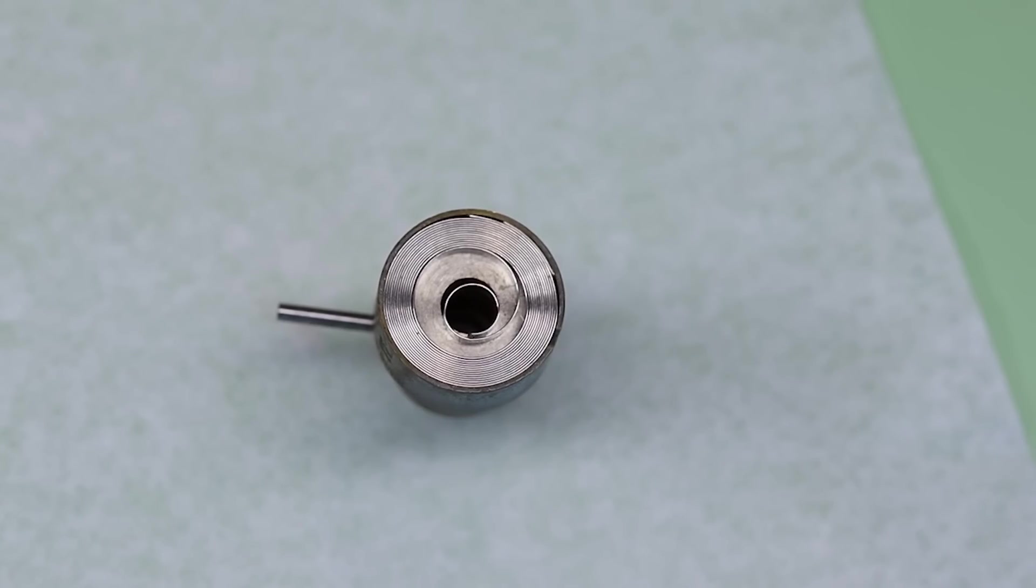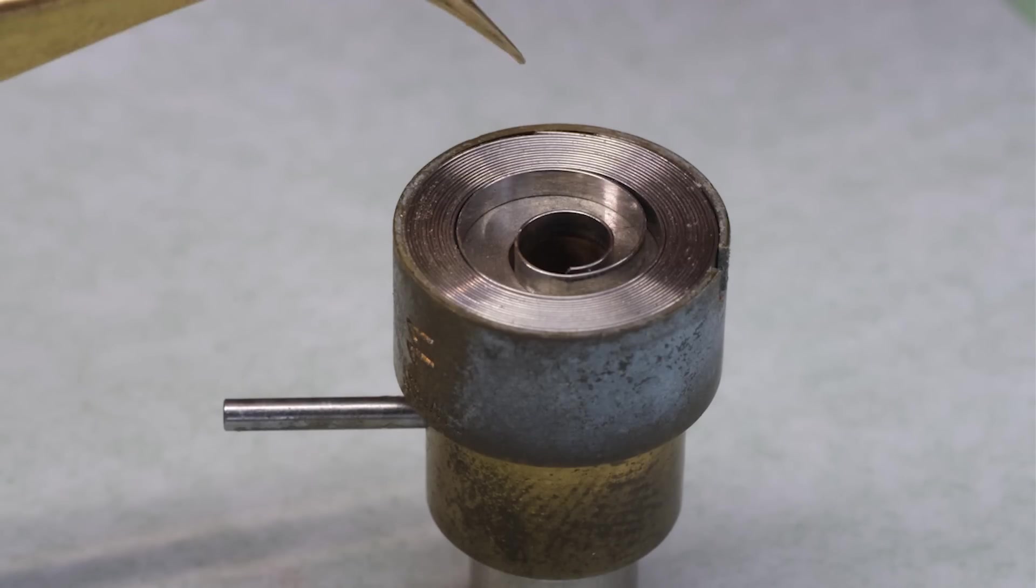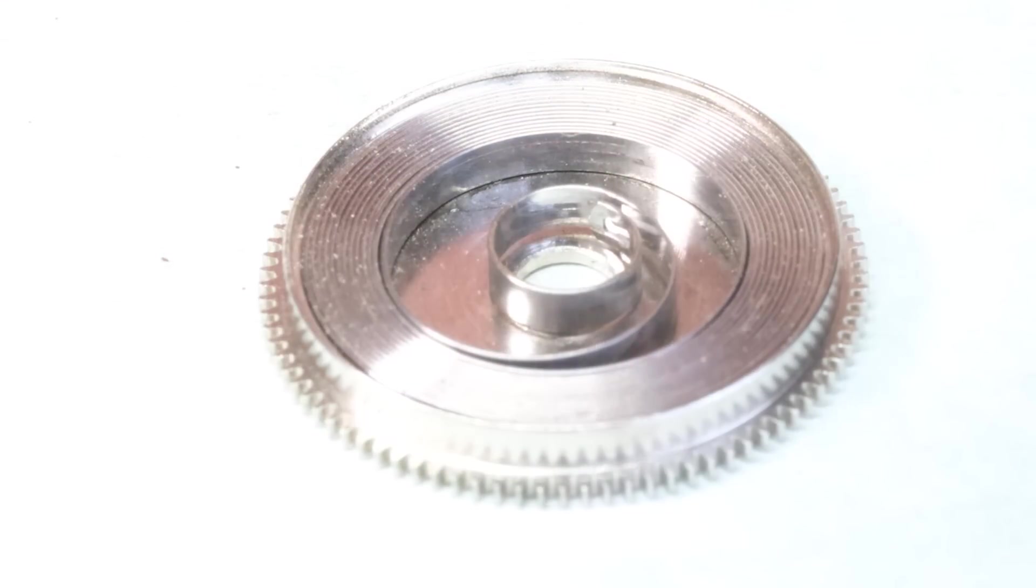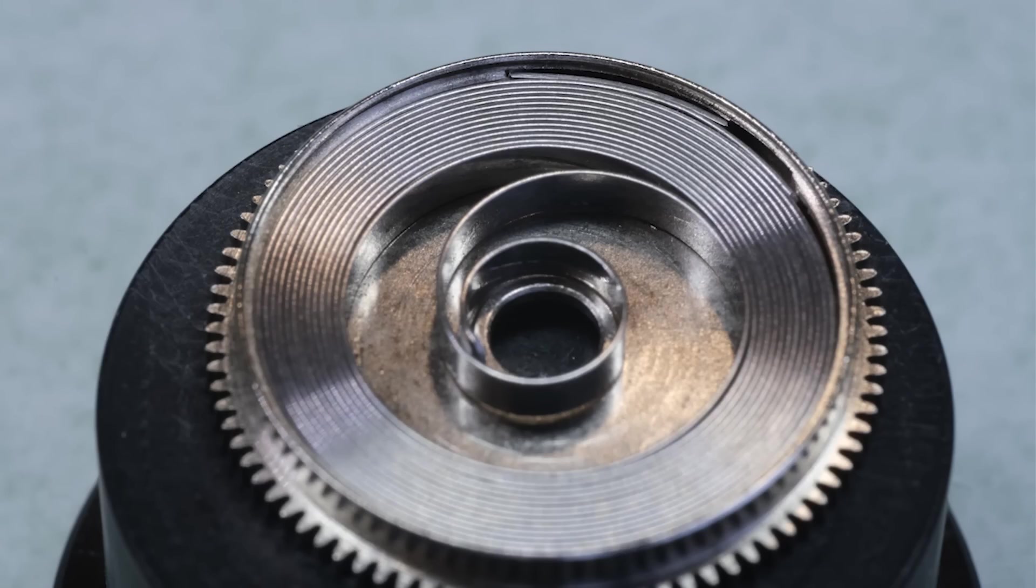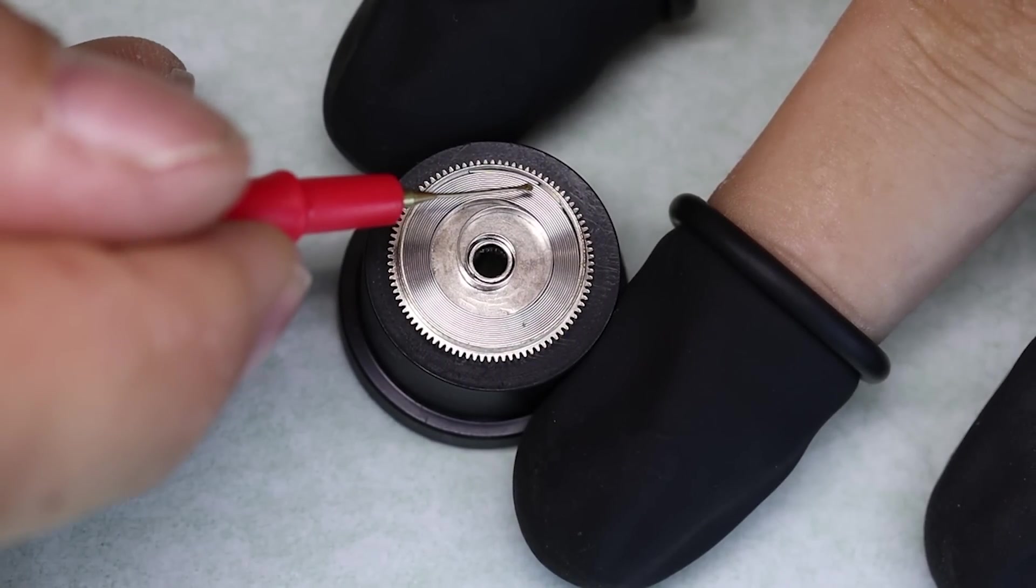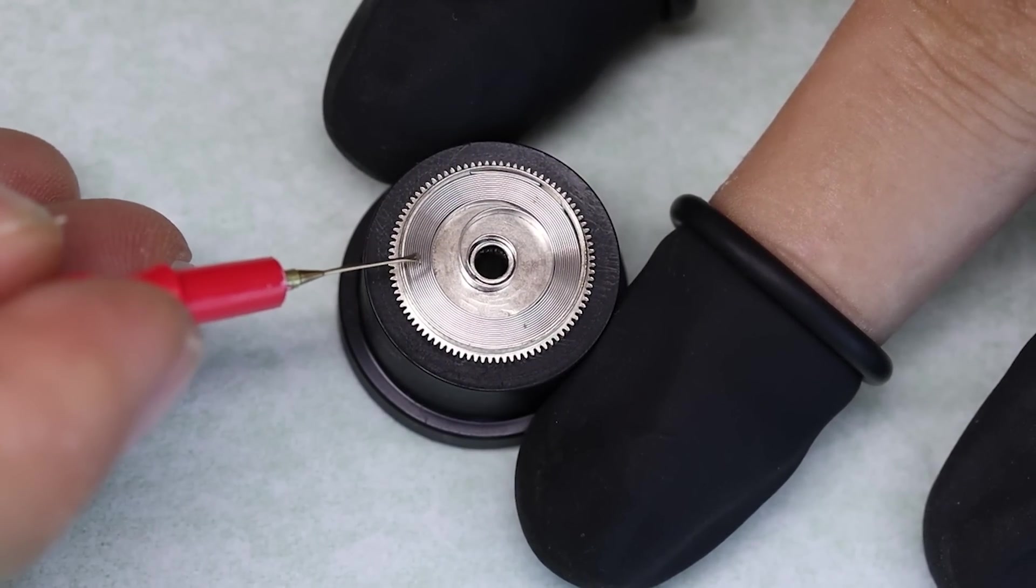And with the mainspring inside the tool there, we'll look where this bridle is now, so we can align that with the cutout in the barrel wall, and then we press it in. And after lubricating a little bit on top of the mainspring, we can put the barrel arbor with that hook into the eye.